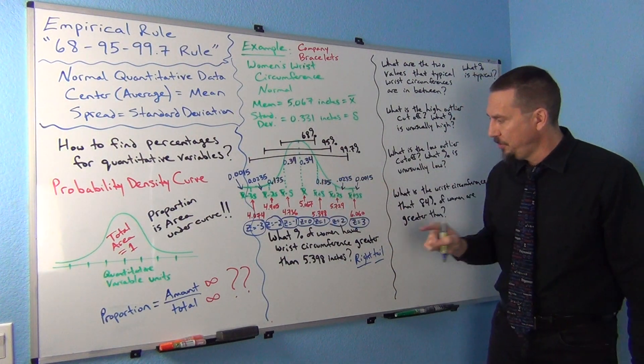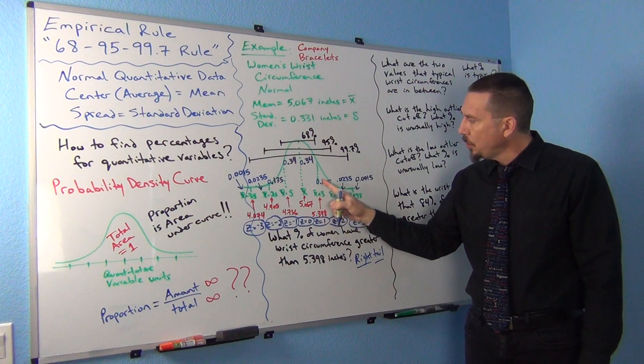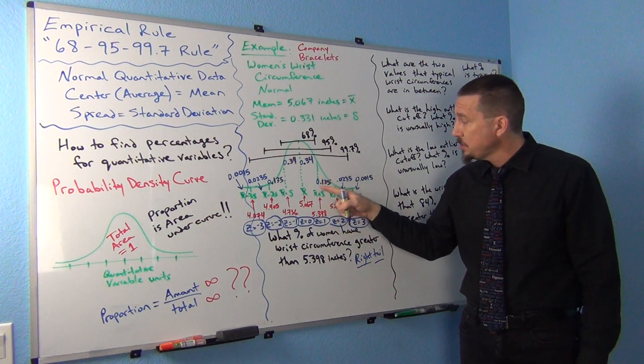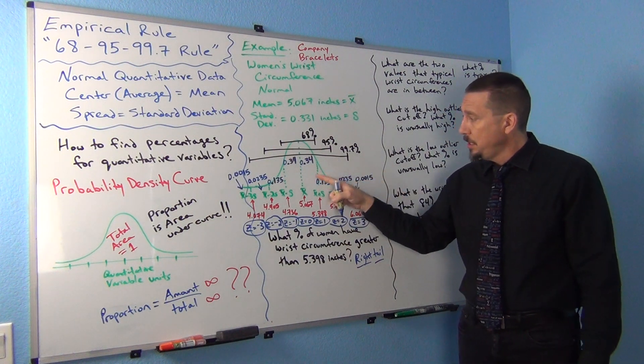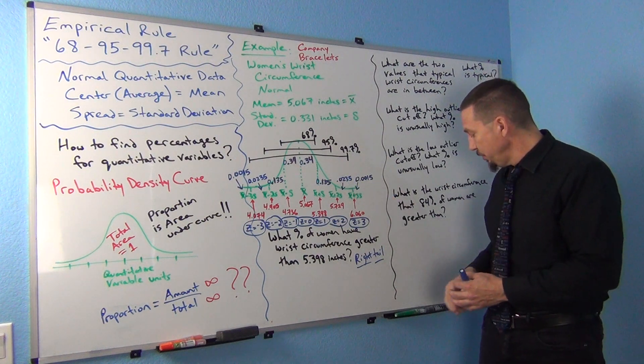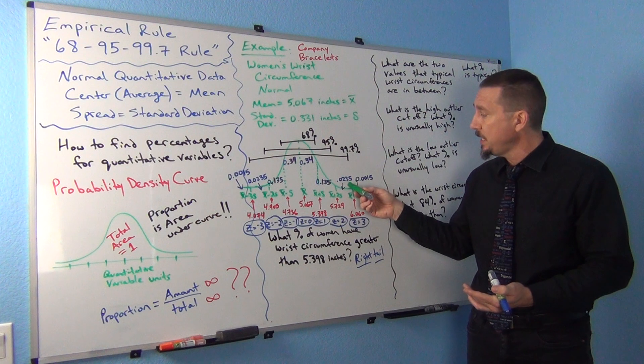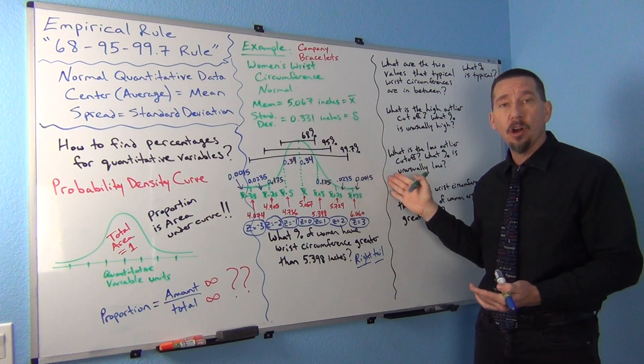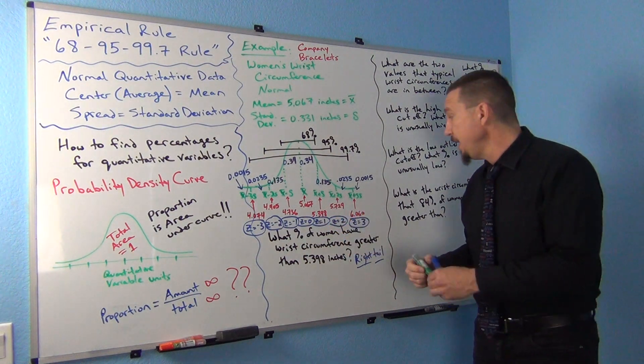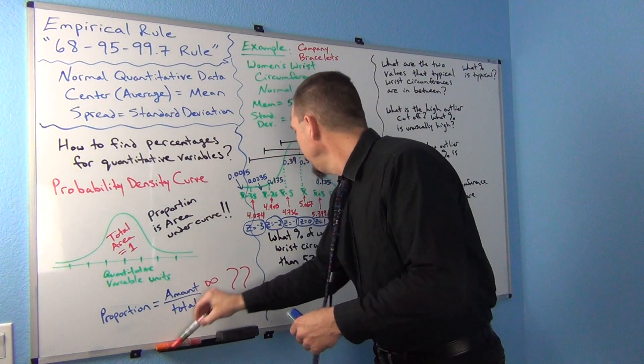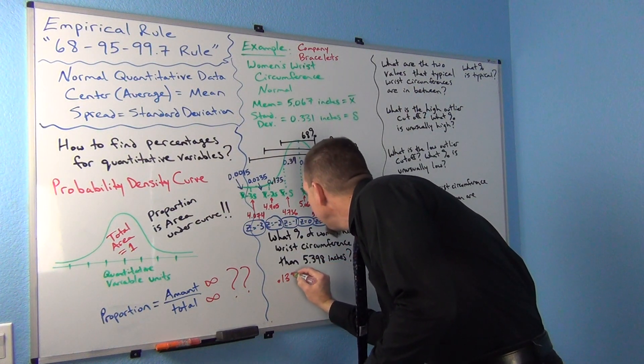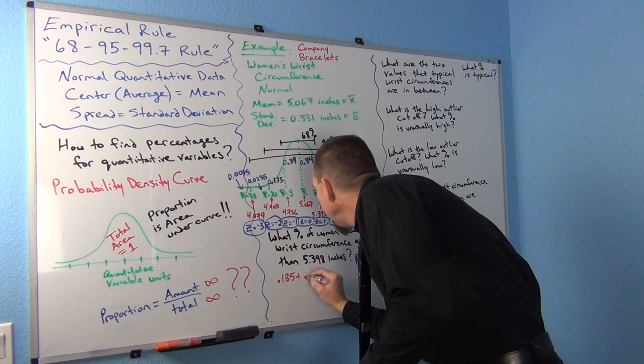So we're looking for all of the sections that are bigger than 5.398. Well, if you notice, there's actually three sections. These three right here. So 0.135, 0.0235, and 0.0015. So to get the answer, we would just want to add up those three sections, because they're all bigger than that cutoff of 5.398. So my answer would be 0.135 plus...